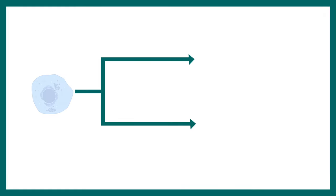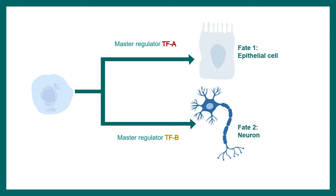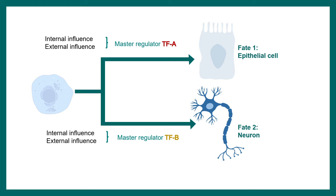Transcription factors are very important from a cell fate specification point of view. A cell can have either an epithelial fate or a neuronal fate — how is this fate chosen? External and internal factors can trigger specific master regulator transcription factors, which may lead to acquisition of one particular fate. This kind of regime is followed in the immune system.